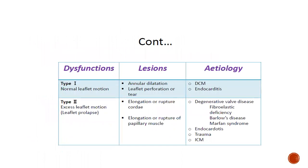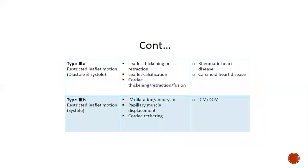MR can be classified according to leaflet motion, as described by Carpentier et al. Type 1 is normal leaflet motion; associated lesions include annular dilatation and leaflet perforation or tear, generally seen in dilated cardiomyopathy and endocarditis. Type 2 is excess leaflet motion, associated with elongation or rupture of chordae or papillary muscles, generally seen with degenerative valve disease associated with Marfan syndrome, fibroelastic deficiency, Barlow's disease, endocarditis, trauma, or ischemic cardiomyopathy.